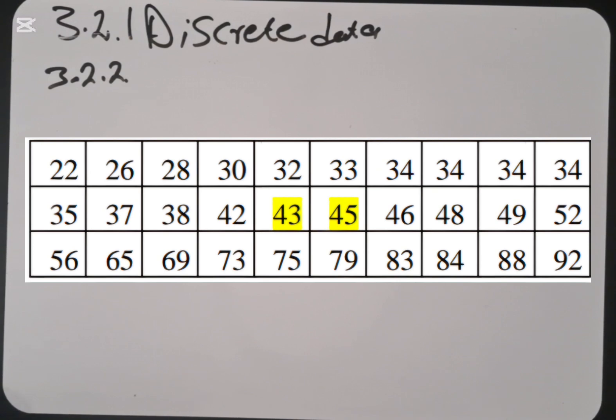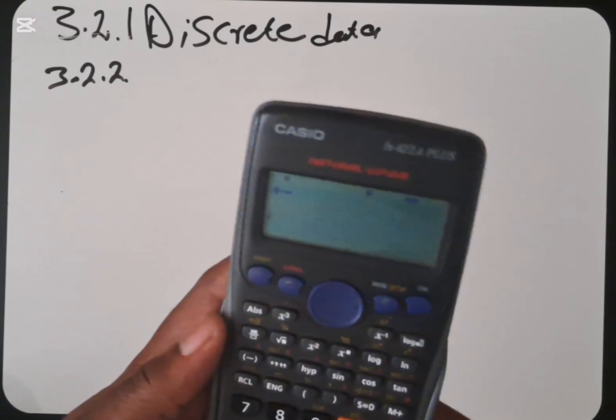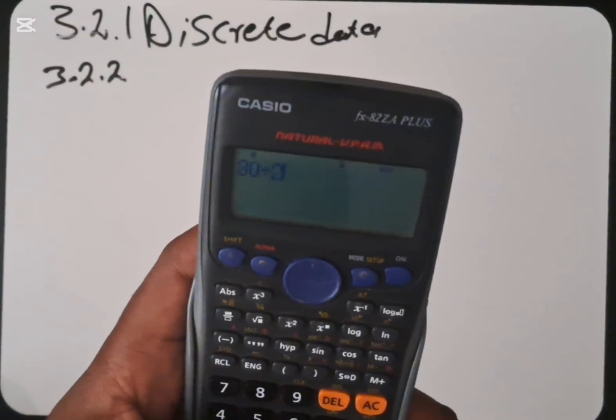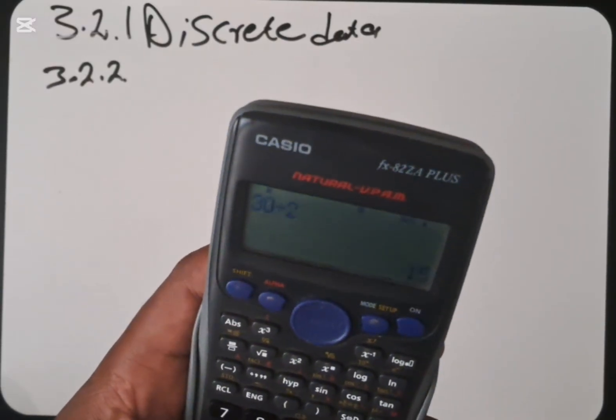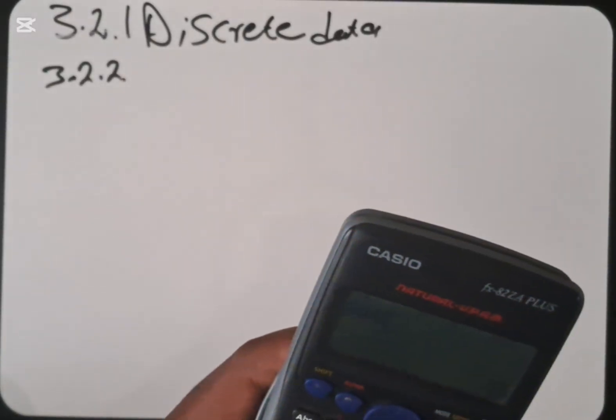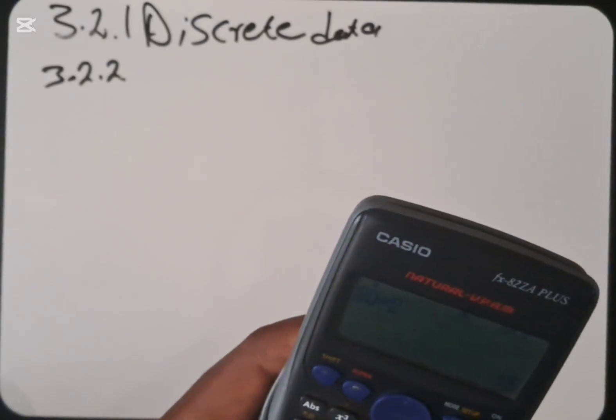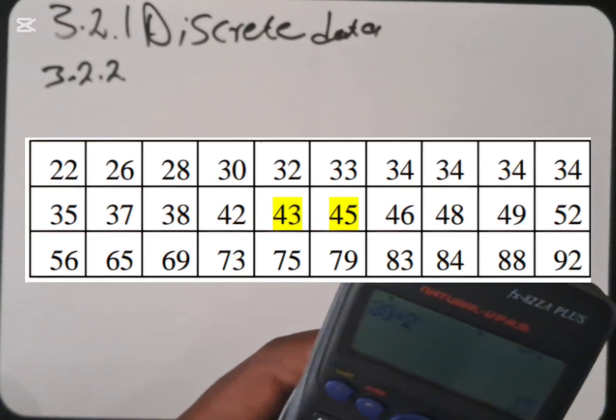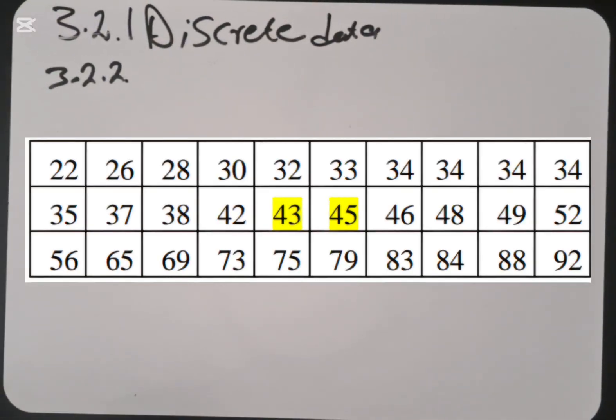So if we check the position that we have, we are having 30 positions. Because we are having 30 positions, we are going to say 30 divided by 2 so that we can be able to find where our mean is located. So because now we are getting 15, we know that our median is found between position 15 and position 16.